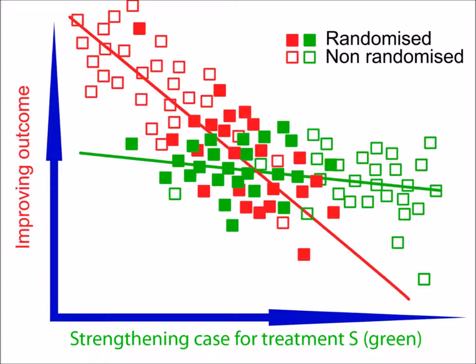If the clinician's impressions of which treatment is indicated are correct, we would expect to see a substantial non-randomised group of cases having treatment S towards the right-hand side of the graph and a substantial non-randomised group having treatment M towards the left-hand side. The coding system allows the randomised cases to be looked at in isolation, avoiding allocation bias, or all cases to be looked at together, helping to define the lines outside the zone of equipoise. The degree of allocation bias introduced by the selection of cases can be modelled and measured by comparing the lines for randomised and selected cases.